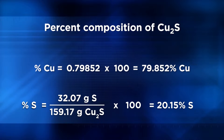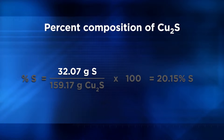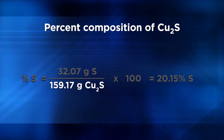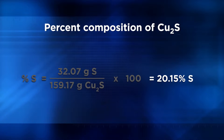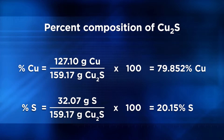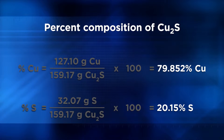We would approach the problem similarly in determining the mass percent of sulfur. In this calculation, take the mass of 1 mole of sulfur, since there is only 1 sulfur in the formula, which is 32.07 grams, and divide that mass by the overall mass of Cu2S, which is 159.17 grams, times 100. The percent by mass of the compound is 20.15% sulfur. You should always double-check your answers to ensure that your percentages always add up to 100 — and in this case, it does.